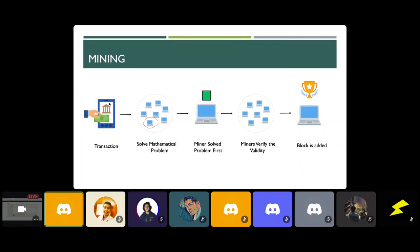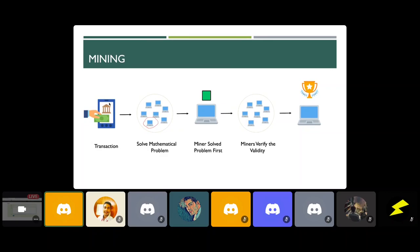Regarding smart contracts and mining: whatever data is in a block — including smart contracts — that block must be mined first before being added to the blockchain. Smart contracts do not generate the mathematical problem. It is the Bitcoin protocol that decides the rules and regulations of the game, including what type of mathematical problem miners need to solve. Smart contracts have nothing to do with the mathematical problem — it is all dependent on the protocol.